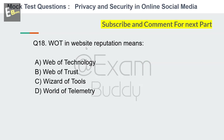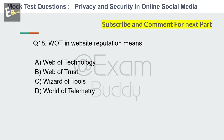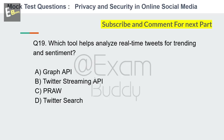Question 18: WOT in website reputation means what? Options: Web of Technology, Web of Trust, Wizard of Tools, World of Telemetry. The answer is B: Web of Trust.